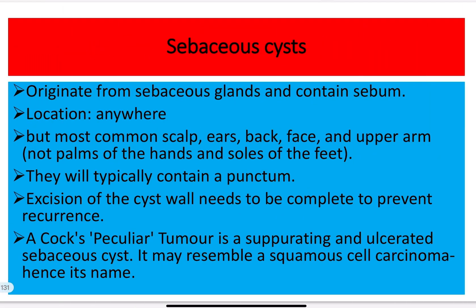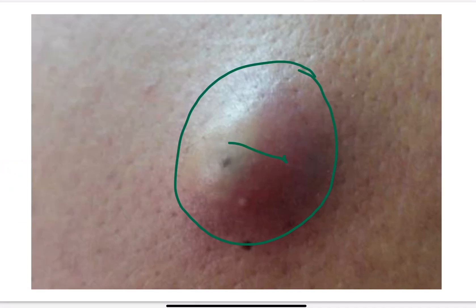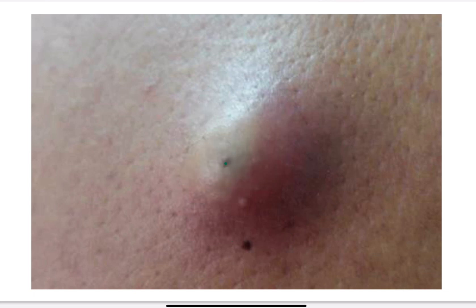A sebaceous cyst arises from the sebaceous gland and contains sebum. It may be present anywhere in the body, but most commonly in the scalp — the head, ear, back, face, and upper arm. They are never present on the palm of the hand or sole of the foot because there are no sebaceous glands there. Typically, about 70% of cases present with a punctum — seen here as the blackish part in the figure.